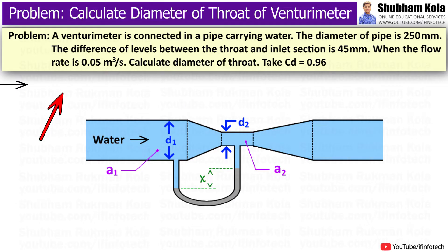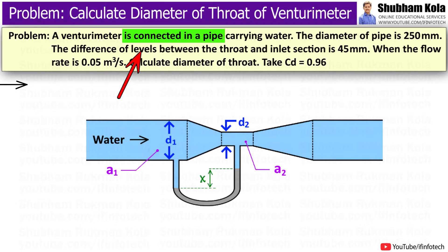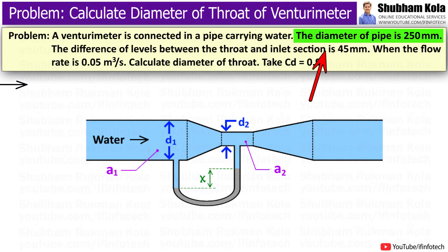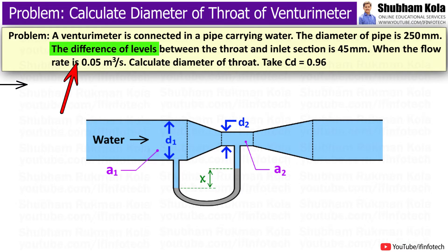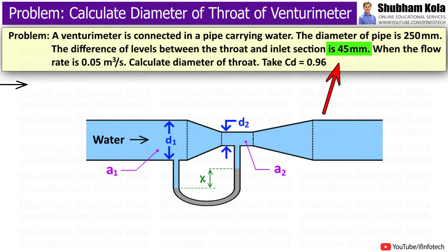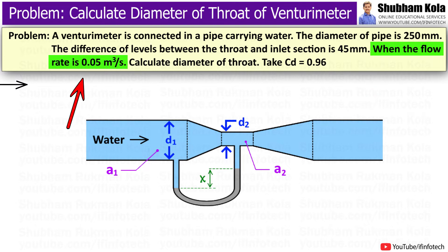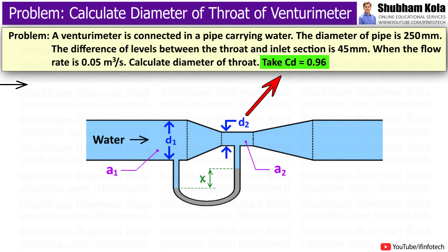The problem statement is given as: a Venturimeter is connected to a pipe carrying water. The diameter of the pipe is 250 mm. The difference of levels between the throat and inlet section is 45 mm. When the flow rate is 0.05 m³ per second, calculate the diameter of the throat. Take CD equal to 0.96.